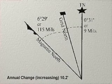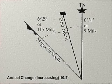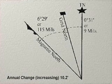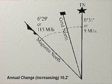Grid magnetic angle. The difference between the grid north and the magnetic north is known as the grid magnetic angle. To determine what the current grid magnetic angle of your map is, simply follow these steps: locate the three north symbols on the margin of your map, determine what the annual change is, then calculate the accumulated change.